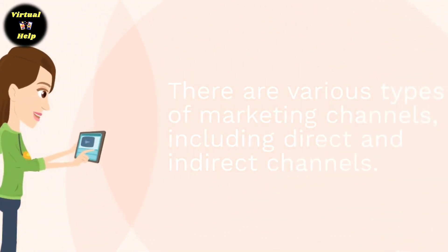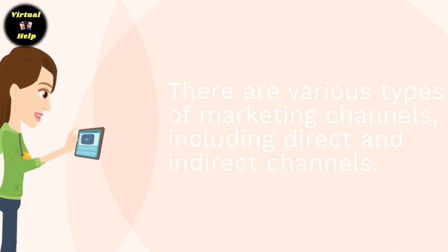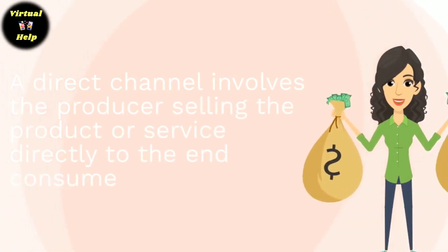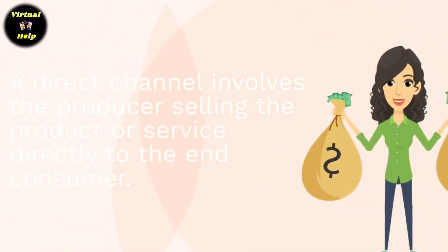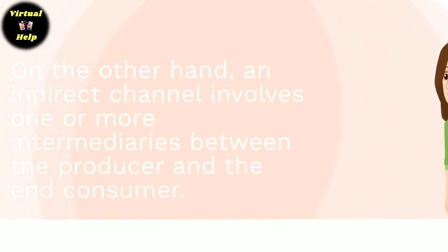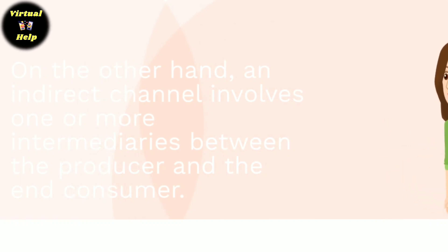There are various types of marketing channels, including direct and indirect channels. A direct channel involves the producer selling the product or services directly to the end consumer. On the other hand, an indirect channel involves one or more intermediaries between the producer and the consumer.